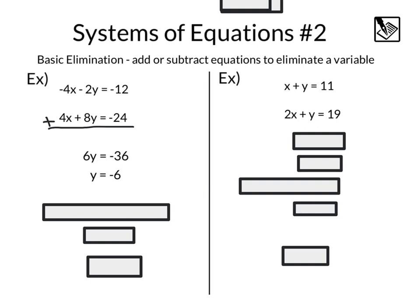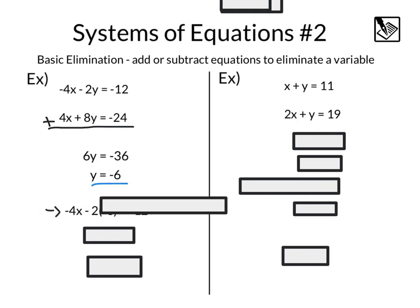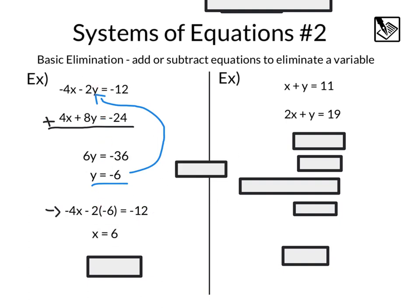Again, we want to take that negative 6 and substitute that into one of our equations up there. So we're going to go ahead and take our top equation. So substituting in that 6 for that y gives us negative 4x minus 2 times negative 6 instead of y equals negative 12. Solving that, we will get x equals 6 and our final answer as a point, 6 comma negative 6.